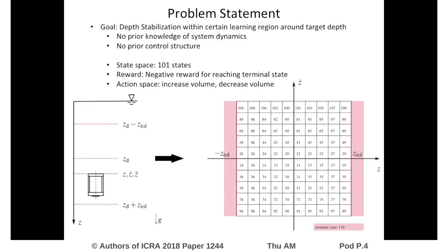The state space consists of agent depth and velocity. The figures illustrate the state space. A zone around the target depth defines the learning region which in this contribution consists of 101 states.